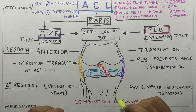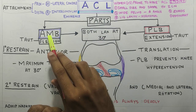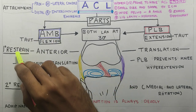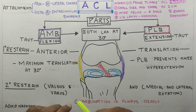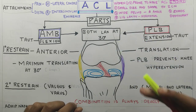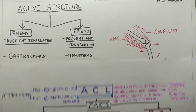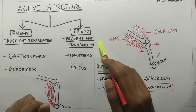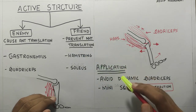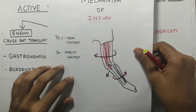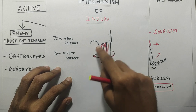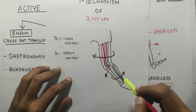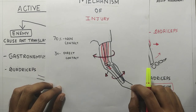To summarize, we talked about the parts of the ACL — the anteromedial and posterior lateral band — and the attachments. We covered the primary and secondary restraint of the ACL and discussed why women are more prone to ACL injuries. We talked about the active structures that cause and prevent anterior translation and their clinical applications. We also covered the mechanism of injury — medial rotation of the femur and lateral rotation of the tibia — which puts stress on the ACL. That's all for today, guys. Thank you.